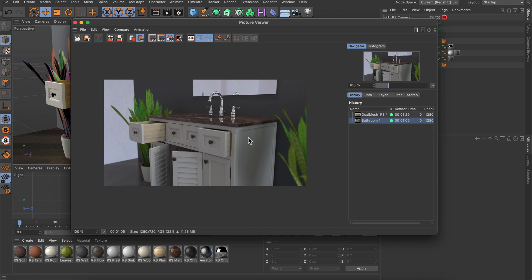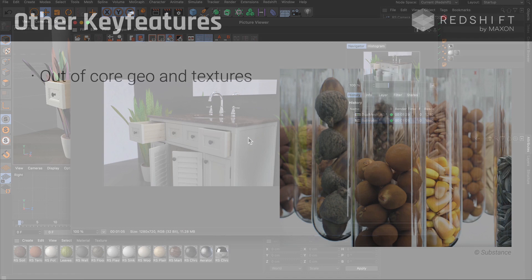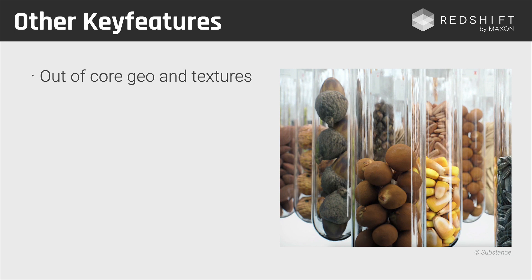Now let me get back to the keynote presentation to show you a few more key features of Redshift. The very first one I want to talk about is out-of-core geometry and textures. This is a powerful technology that allows you to render really big scenes using Redshift. With GPU rendering, the restricting factor is always video memory. If you have a graphics card with 8 or 12 GB of memory, that's not as much as 64 GB of RAM. Redshift is capable of streaming geometry and textures from RAM onto the GPU and rendering them directly, allowing you to create huge scenes — necessary for large VFX renders or anything needing more than the available video memory.